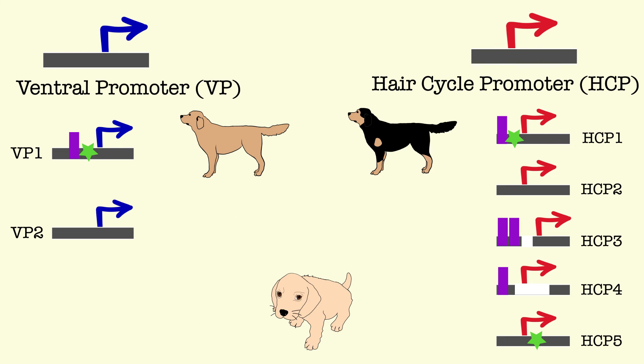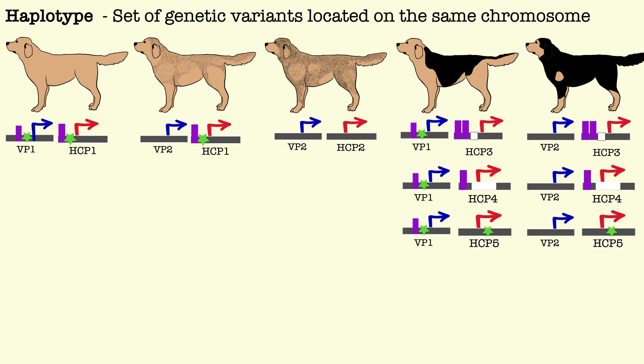Meaning, if a puppy received ventral promoter 1 from mom and ventral promoter 2 from dad, mom's copy would be expressed. The researchers could now associate each dog color pattern with a haplotype of the ventral and hair cycle promoters. For example, a haplotype of ventral promoter 1 and hair cycle promoter 1 gives a dominant yellow pattern as both promoters are strong ASIP expressors.